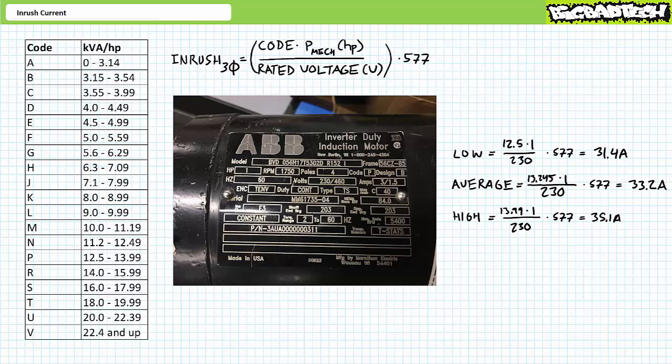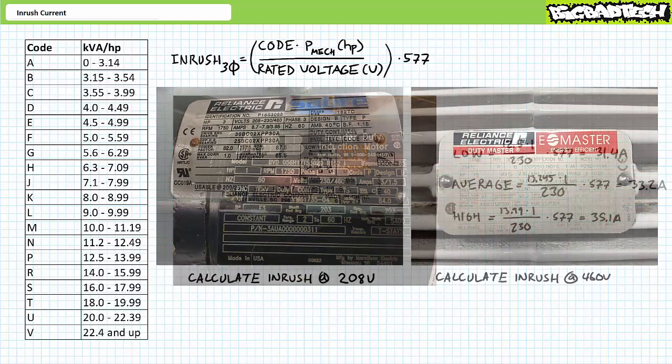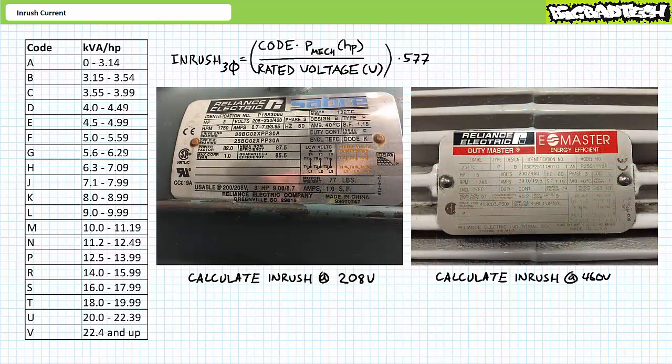This is way more than the six times rated current shortcut suggests, illustrating the shortcut is quick but isn't always accurate for all applications. Before we move on to the electrical theory describing inrush, let's put your knowledge of calculating inrush to the test with two illustrated examples.